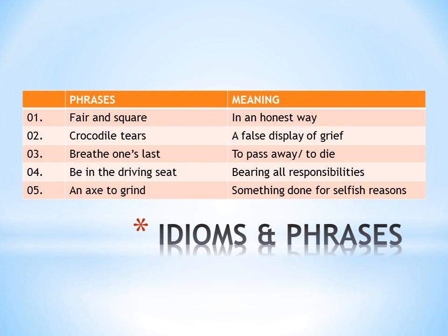Fourth is: be in the driving seat. Think about it — the driver is always the one responsible when a car is running. All the people sitting in the car, 5 or 6 of them, their lives depend on the driver's hands. So be in the driving seat means bearing all the responsibilities — you are the one in control.